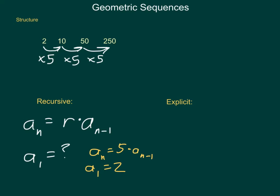That gives us: 2, 10, 50, 250, 1250, and so on. An explicit formula, if you'll remember, is a formula that allows us to move directly to any given term, rather than having to build it from the one before.